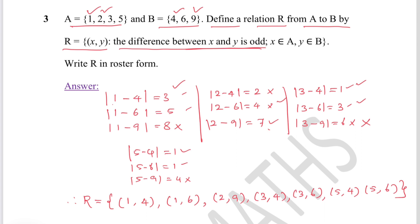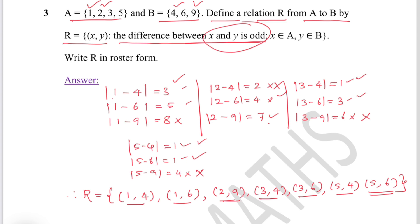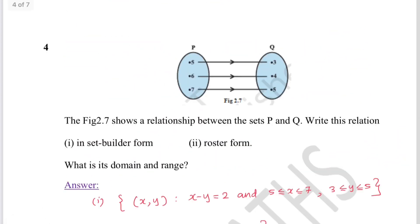For the last element 5: |5-4| = 1 (possible), |5-6| = 1 (possible), |5-9| = 4 (not possible). Collecting all valid pairs: R = {(1,4), (1,6), (2,9), (3,4), (3,6), (5,4), (5,6)}. These are all ordered pairs satisfying the condition that the difference is odd.